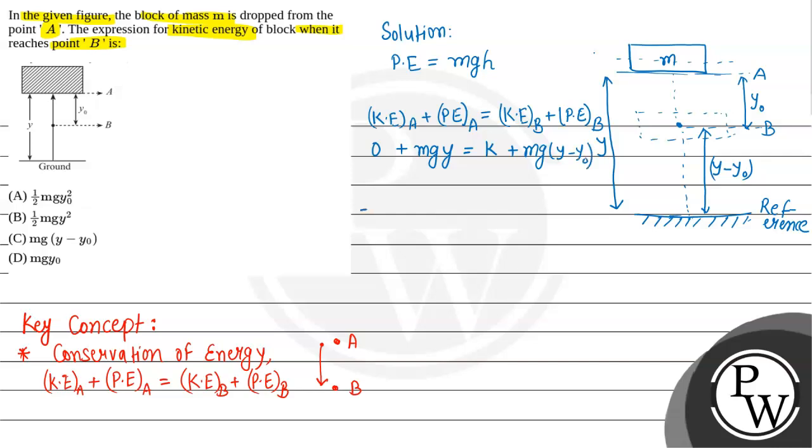So MGY equals K plus MGY minus MGY naught. We cancel these terms. Therefore, K equals MG times Y naught.